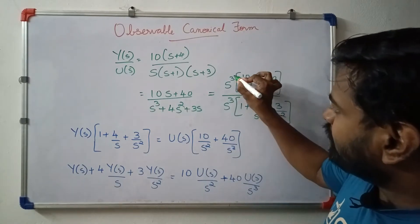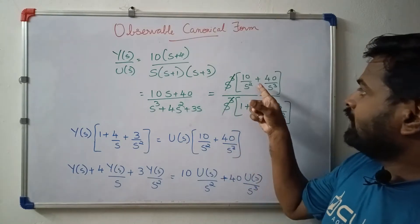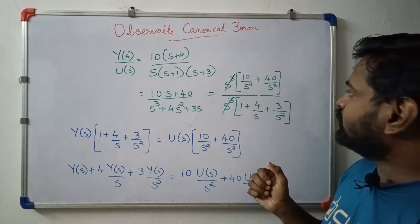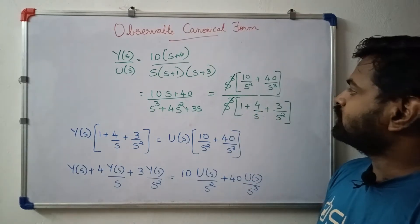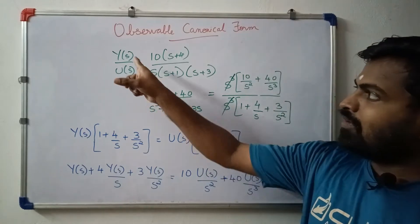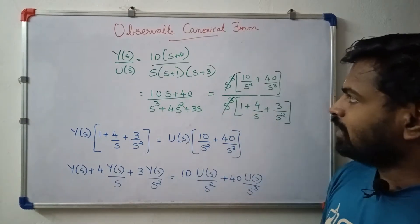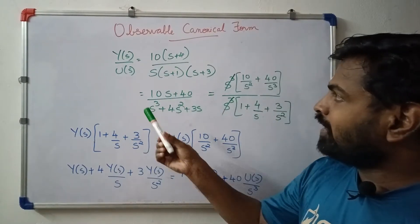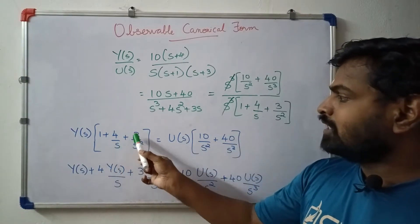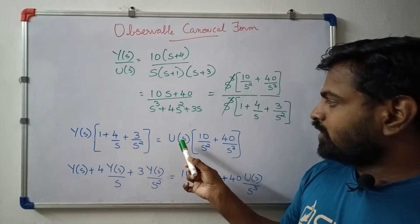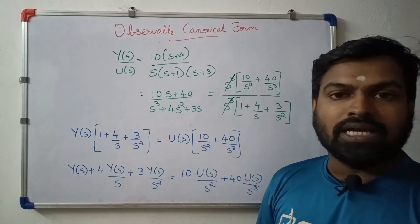Here is the highest power term: s cubed. We divide through, giving us 10 divided by s squared plus 40 divided by s cubed, all divided by 1 plus 4 over s plus 3 over s squared — the whole expression divided by s cubed.